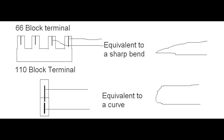In the networking wiring closet, 110 blocks are used to connect network cables to patch panels. 110 connections can also be used at the other end of a network cable at the RJ-45 wall jack. 110 blocks are the new standard and are preferred over 66 blocks because they support higher frequencies and less crosstalk.